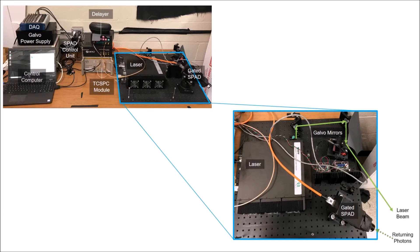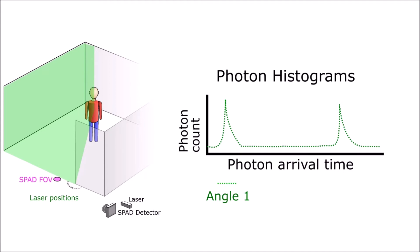These photon returns are collected to form a histogram of photon returns over time. We form this histogram using a single pixel single photon avalanche diode or SPAD and time correlated single photon counting. For each illumination position we collect one histogram.